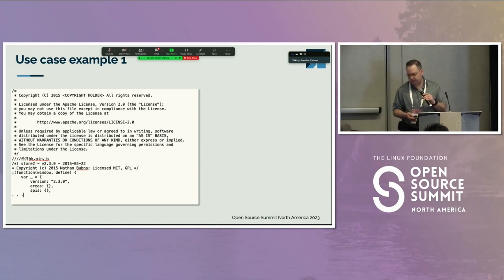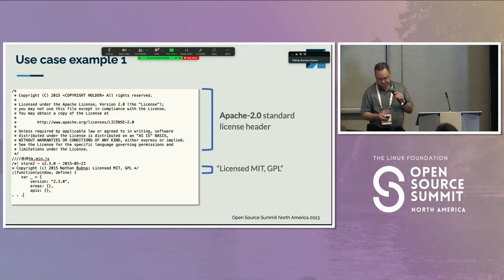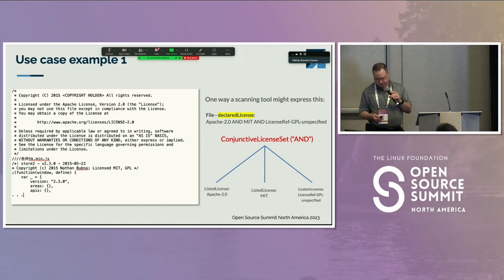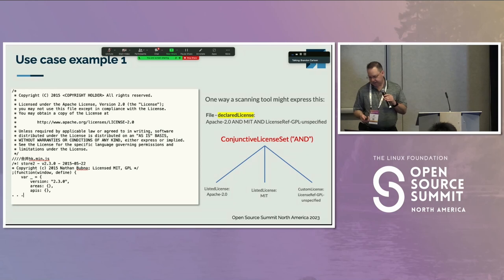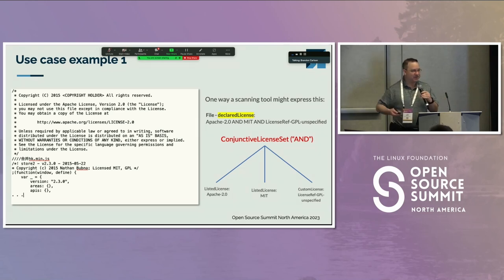It's very common for one license to apply to a snippet and another license or set of licenses to apply to another snippet. Here we have an example showing in the file header that we have the Apache 2 license, and then immediately below that a comment indicating a specific component with another license — in fact, two licenses. A scanning tool might scan this file and think of all the licenses as just applying to this file. In this particular case, we're making the assumption that GPL is unspecified, so it is a custom license — it's not one of the standard licenses.